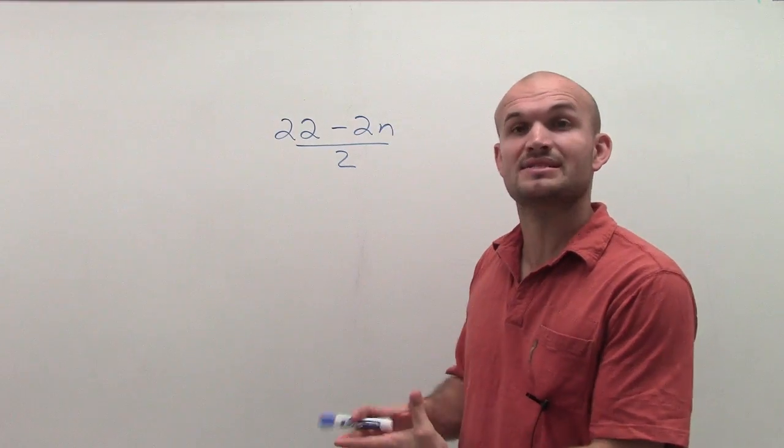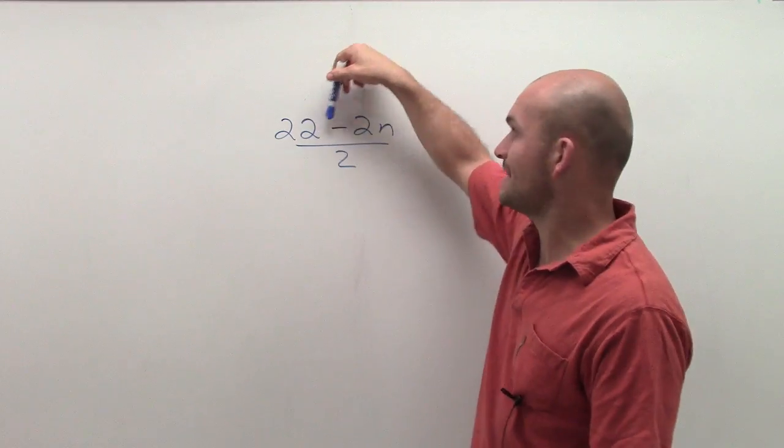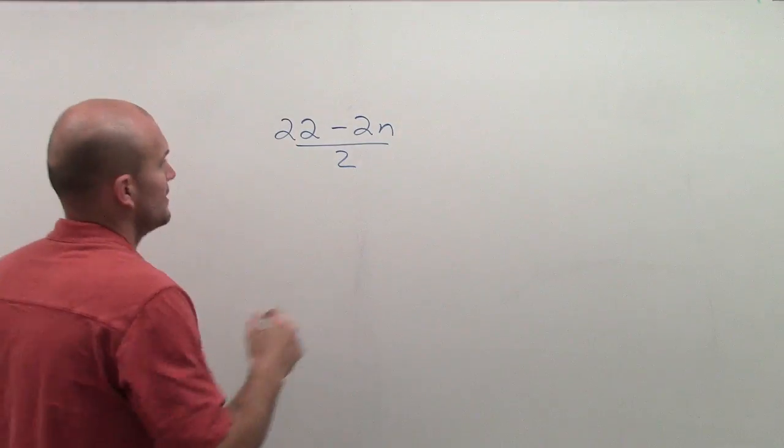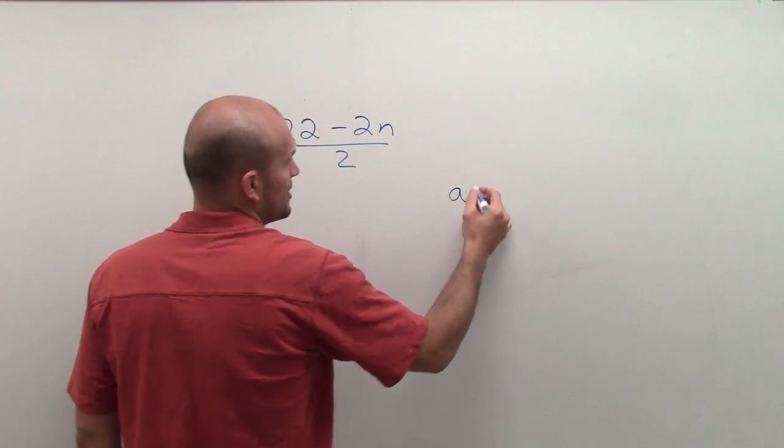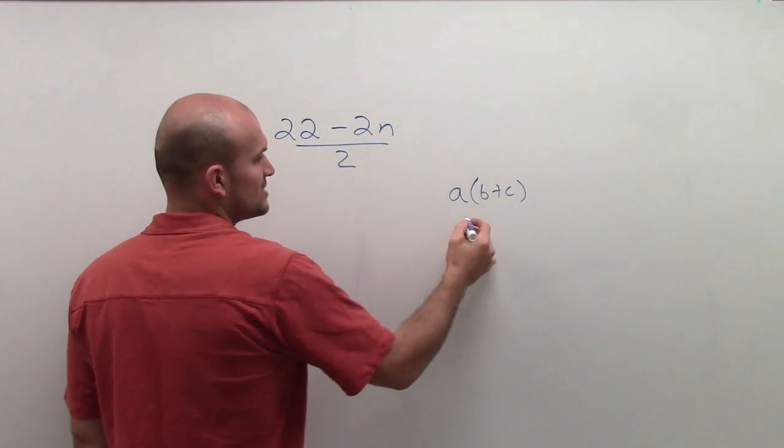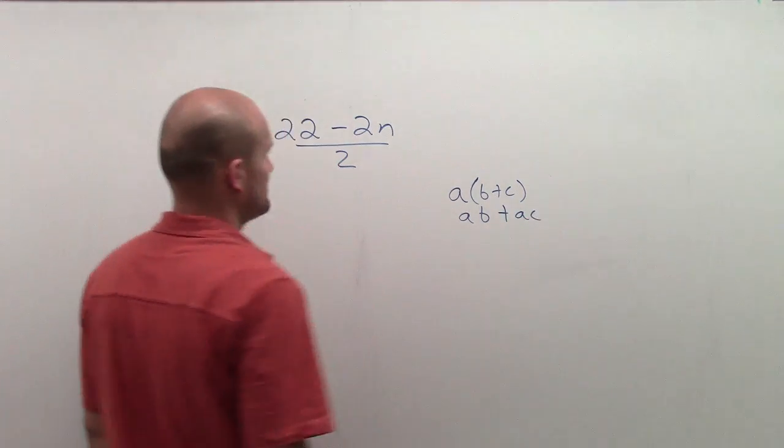Because a lot of times when you're simplifying expressions or equations or solving, it's going to become very important for you to understand that this can be rewritten in a different form. And I'll show you how and why. So first of all, we know that the distributive property, a times b plus c, can be represented as a times b plus a times c.